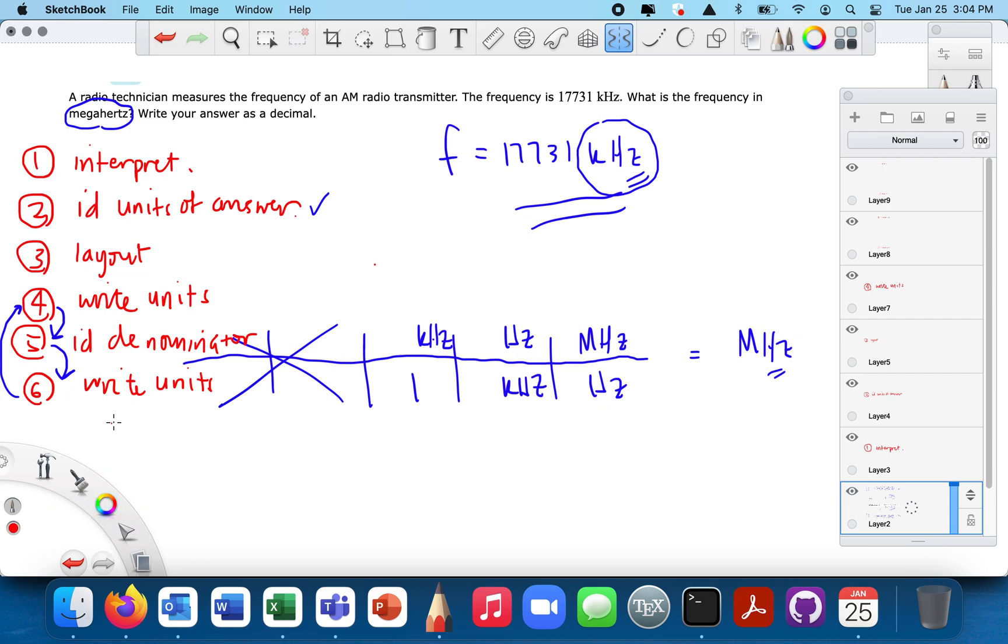So we've got our solution laid out. Let's write it in. 17731 kilohertz. And kilo means one times ten to the three. That's what kilo means, and I'm going to look that up. And mega means ten to the six.